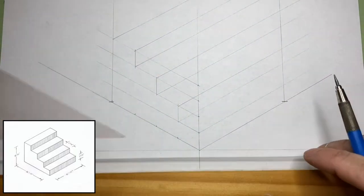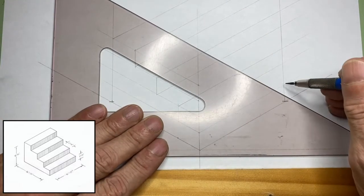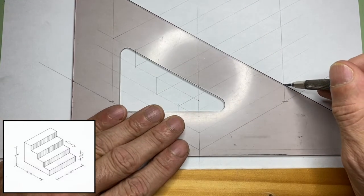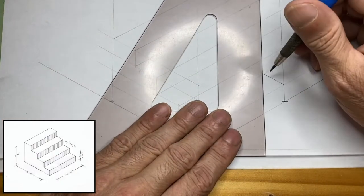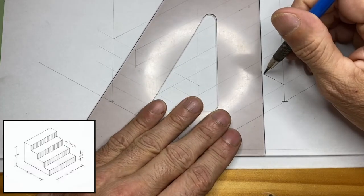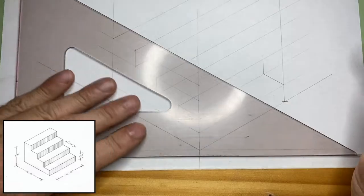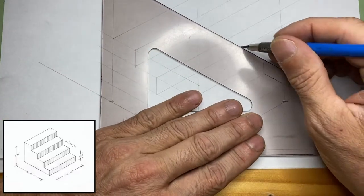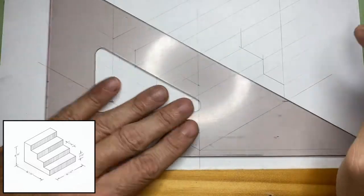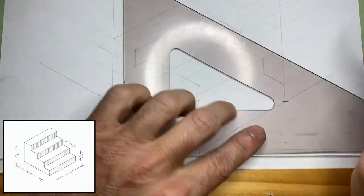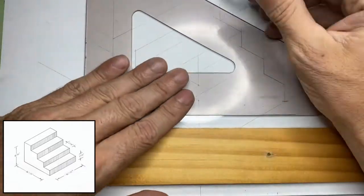Now we'll map out the stairs on the other side. We'll draw a thirty-degree line at the corner, to the left, draw a vertical, back to a thirty-degree, a vertical, and so on. We'll draw a thirty-degree line.